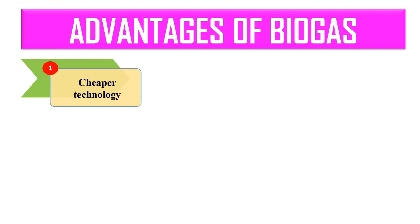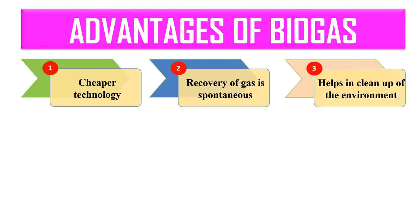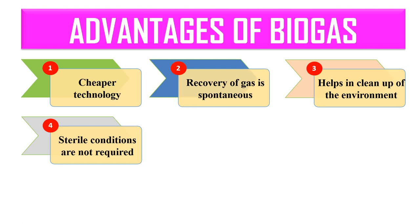What are the advantages of biogas? Biogas production is a cheaper technology compared to other biofuels. The recovery of the product, methane, is spontaneous — no special experiments or purification techniques are needed; it is automatically produced and can be collected. By using organic waste for biogas production, we also remove waste from the environment, helping to clean it up.